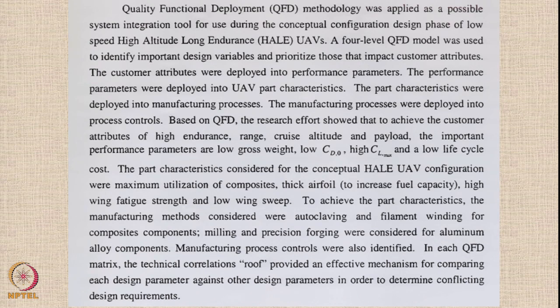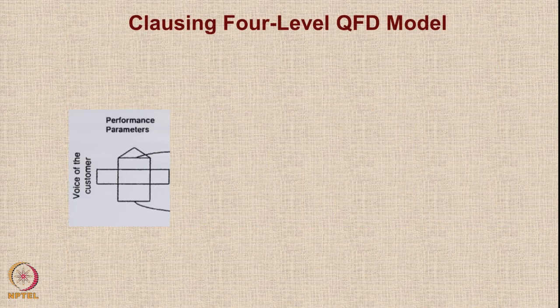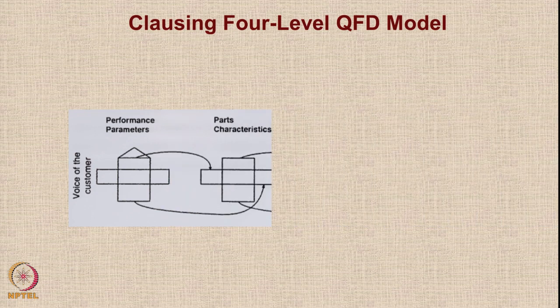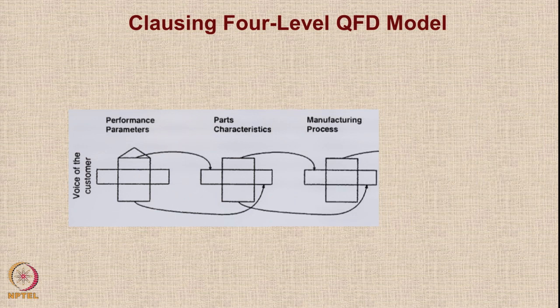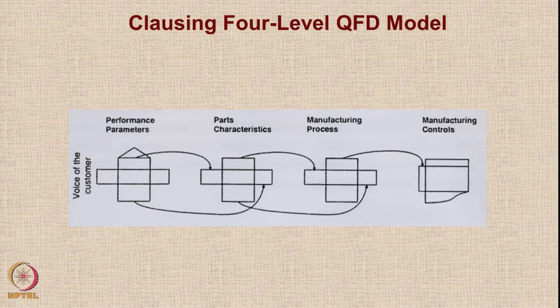In each QFD matrix, the technical correlation roof provided an effective mechanism for comparing each design parameter against the others to determine conflicting requirements and also to identify which requirements support each other. This is the whole abstract — you can pause the video to read it more carefully.